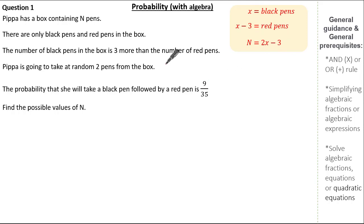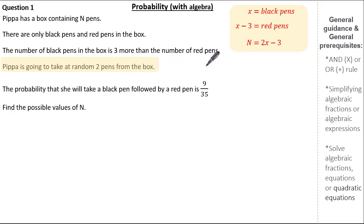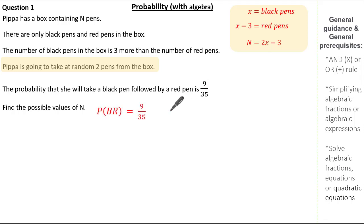One important piece of information is that Pippa is going to take at random 2 pens from the box — this means we have dependent events, where one event directly impacts the probability of another. So let's form our equation using the AND or OR rule. We know the probability that she takes a black pen followed by a red pen is 9 over 35, so we're illustrating: probability of black AND red equals 9 over 35.